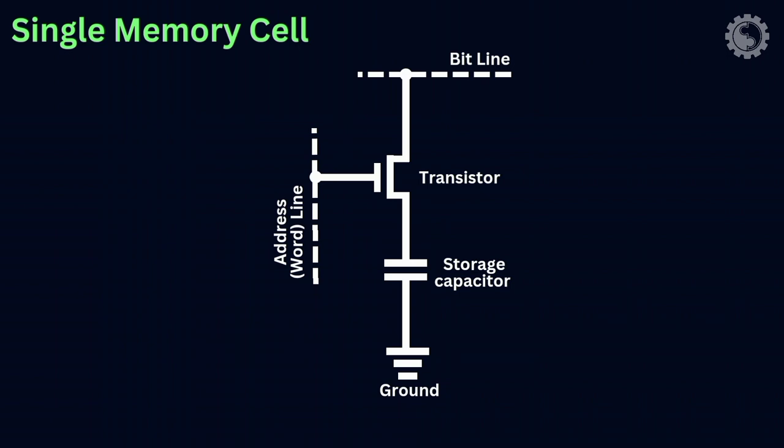In this diagram, the address line, also known as word line, is used to signal the transistor to close or open. The transistor acts as a switch, closing when voltage is applied to the address line or opening when no voltage is applied.